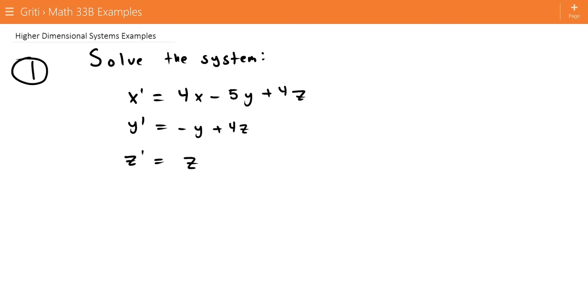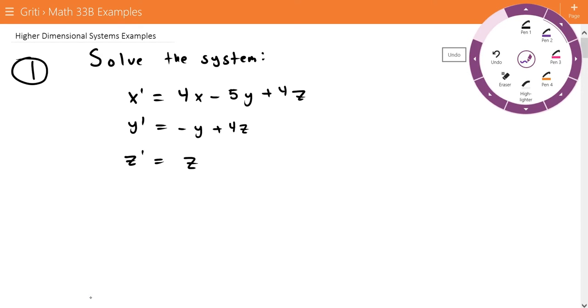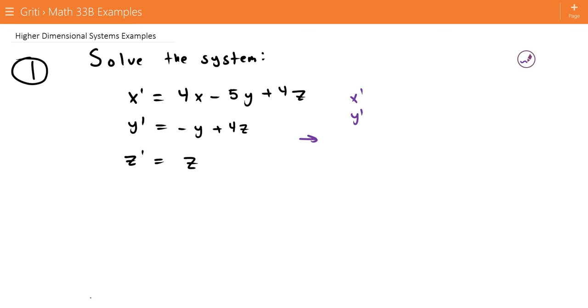So the way we go about this is we first convert this into a matrix equation, and we do that by turning this into a vector: x prime, y prime, z prime. I'll use a different color. So x prime, y prime, z prime. This is our vector. And then convert this into a vector. I'm going to put all the y terms underneath the y terms, all the z terms underneath the z terms.